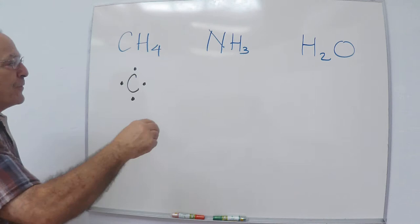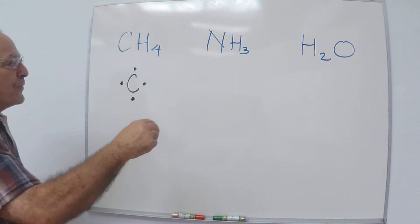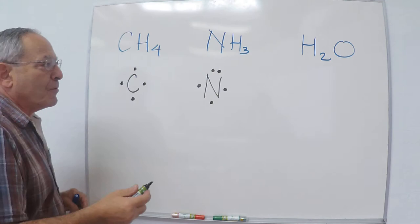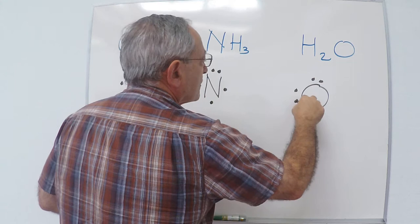Nitrogen has five valence electrons, so here are the first four, now we have to start doubling them up. Doesn't matter which side you double them up on. And finally, oxygen has six valence electrons.